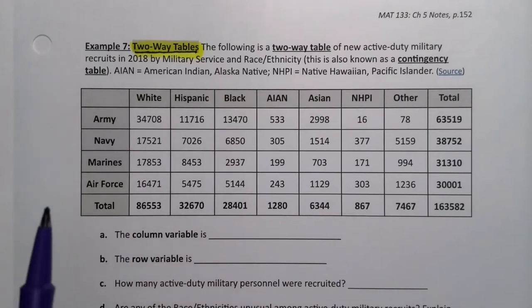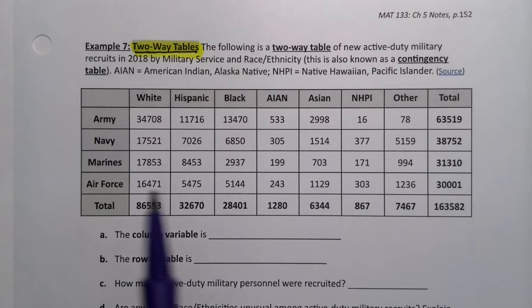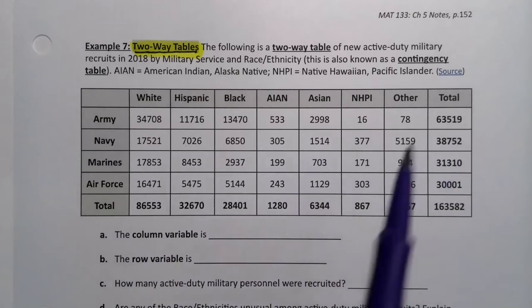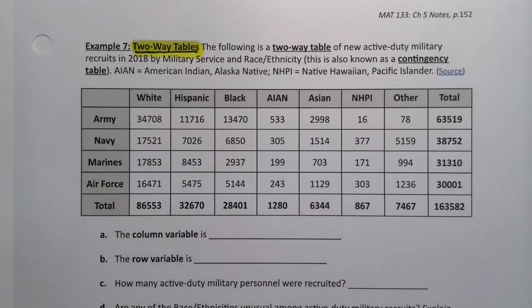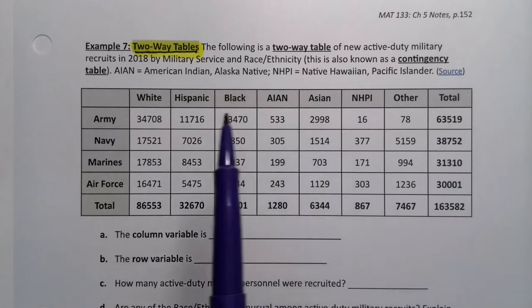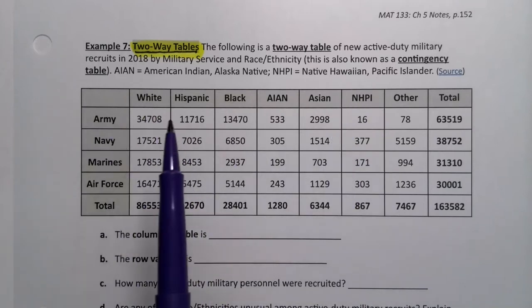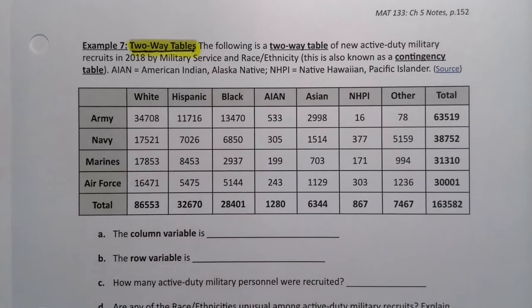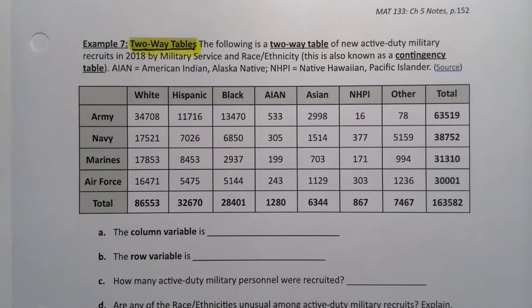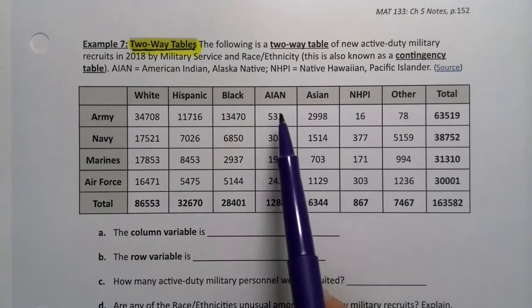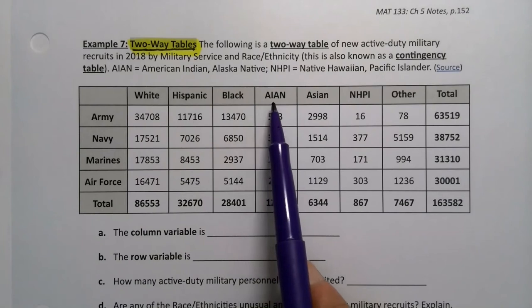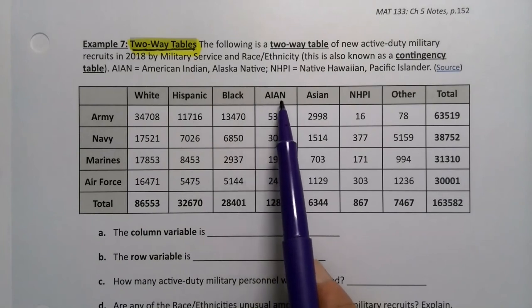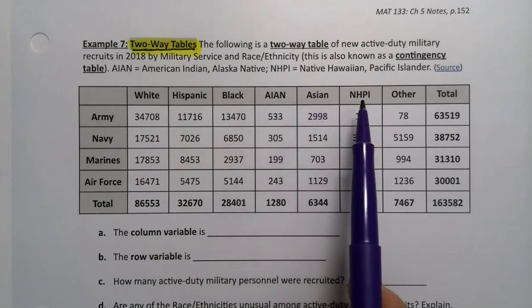It's also called a contingency table. And by the way, yes, these are real data. You're welcome to ask me for the source or email me if you want to know. So it's available publicly. So we have the different race ethnicities right here, and we have the different military services, the four main branches of military service. And some of these are abbreviated. AIAN is American Indian Alaskan Native. NHPI is Native Hawaiian or Pacific Islander.